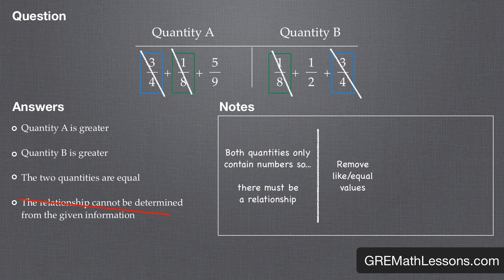Quantity A has five-ninths, and quantity B has one-half. We can now remove the third answer, since these are definitely not equal values.